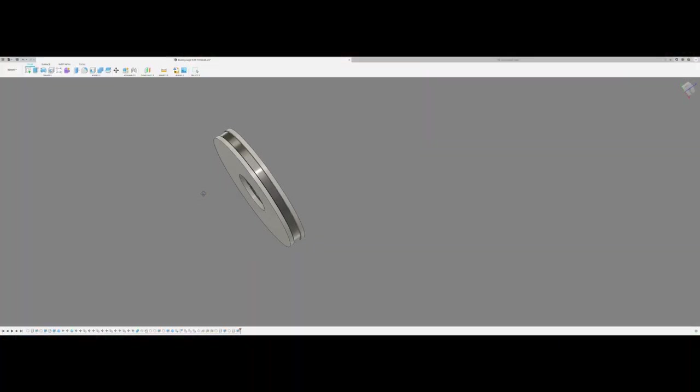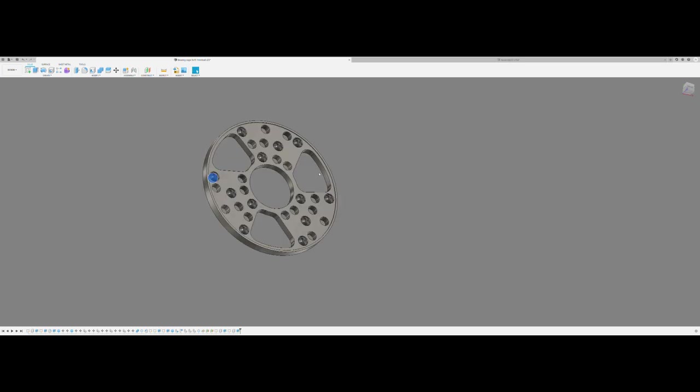So here's our bearing assembly. You can see it consists of several different pieces. We've got two thrust washers, the bearing cage, and then the individual bearings.